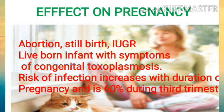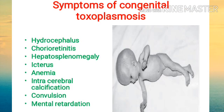The risk of infection increases with the duration of pregnancy, and the risk is higher during the third trimester — about 60%. The main symptoms of congenital toxoplasmosis in a newborn include hydrocephalus, chorioretinitis, hepatosplenomegaly, icterus, anemia, intracerebral calcification, convulsions, and mental retardation.